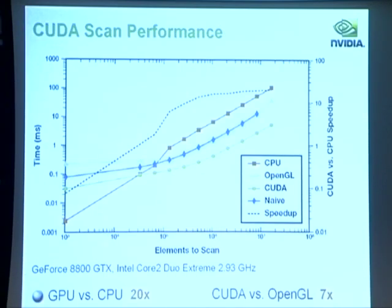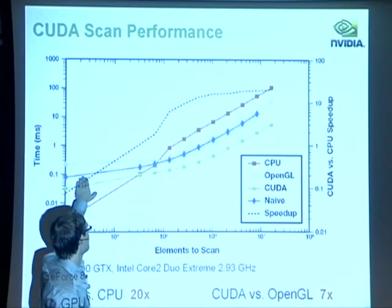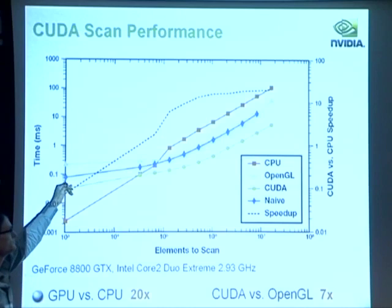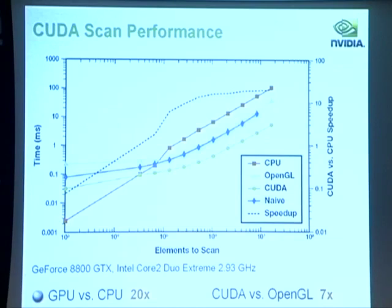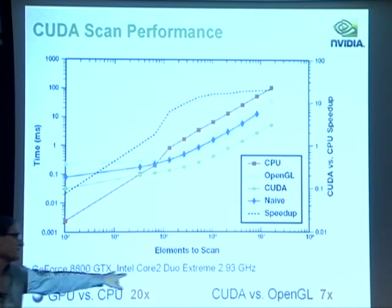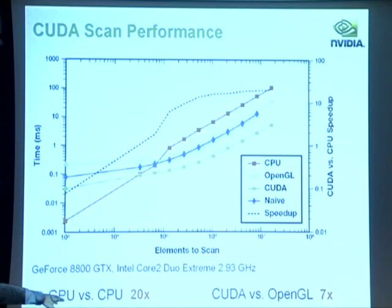In terms of actual CUDA performance, the work-efficient CUDA implementation (green line) significantly outperforms the previous OpenGL implementation (light blue) and the naive CUDA implementation (dark blue). The gap from work efficiency is about equivalent to having to go all the way out to device memory and back every iteration, which is what the OpenGL implementation must do. The speedup versus a single-core Intel Core 2 Duo was about a factor of 20, and the speedup versus OpenGL was about a factor of 7.